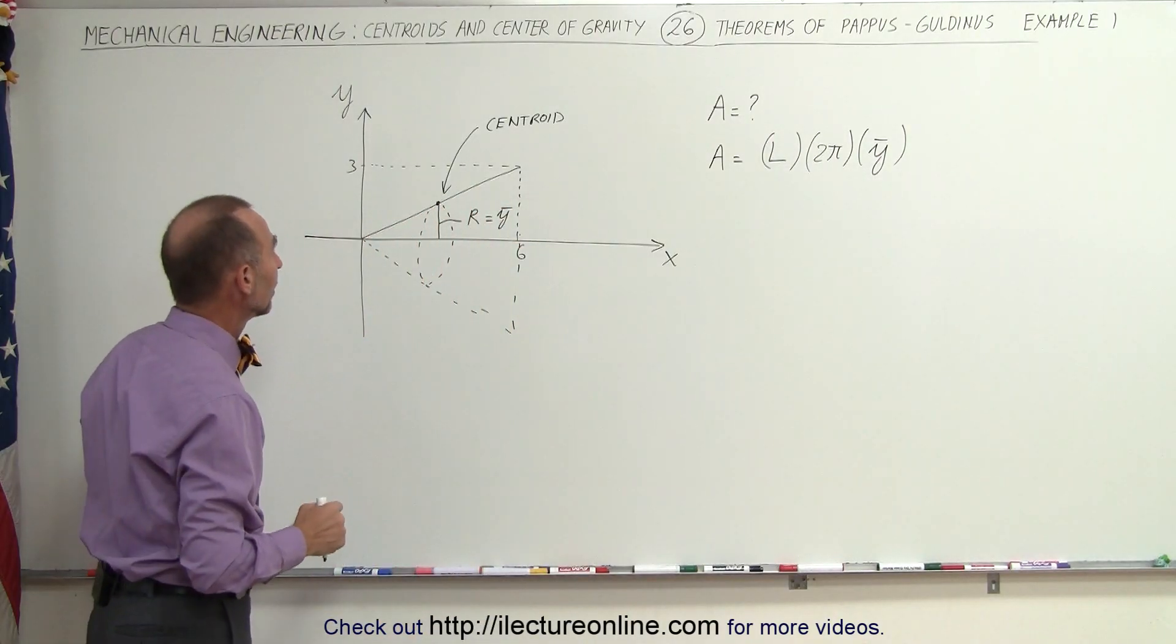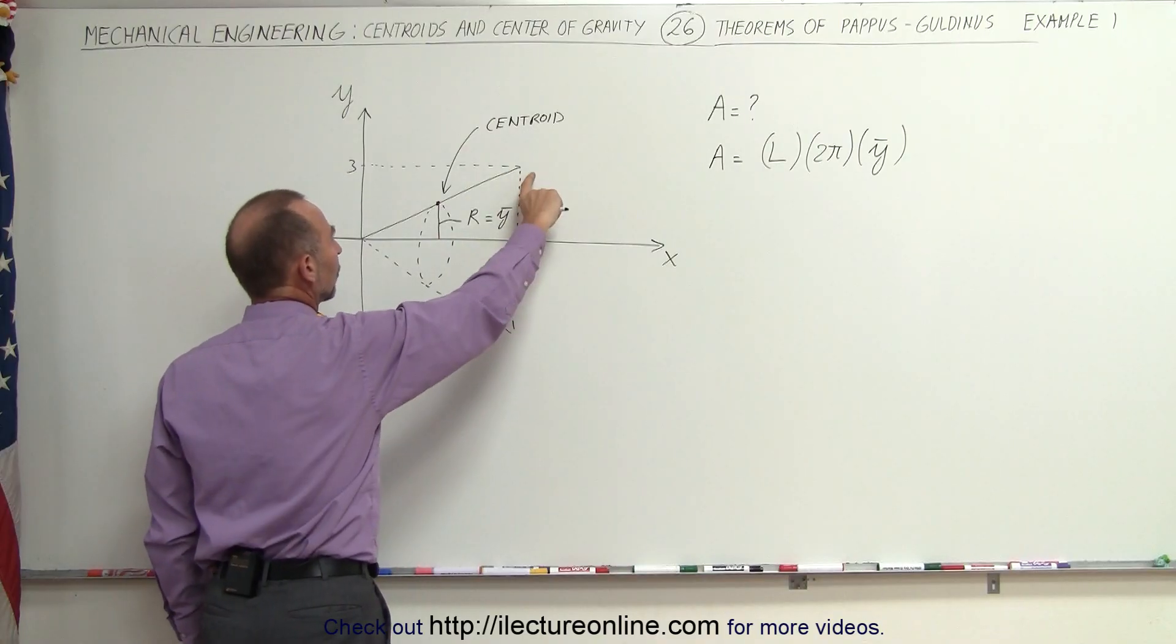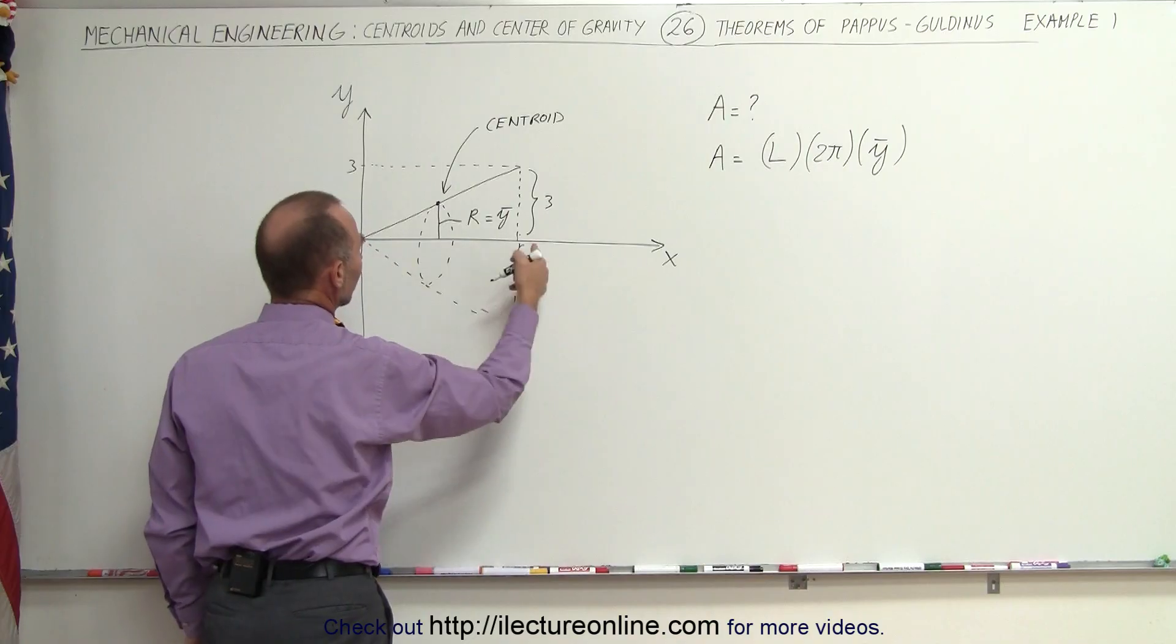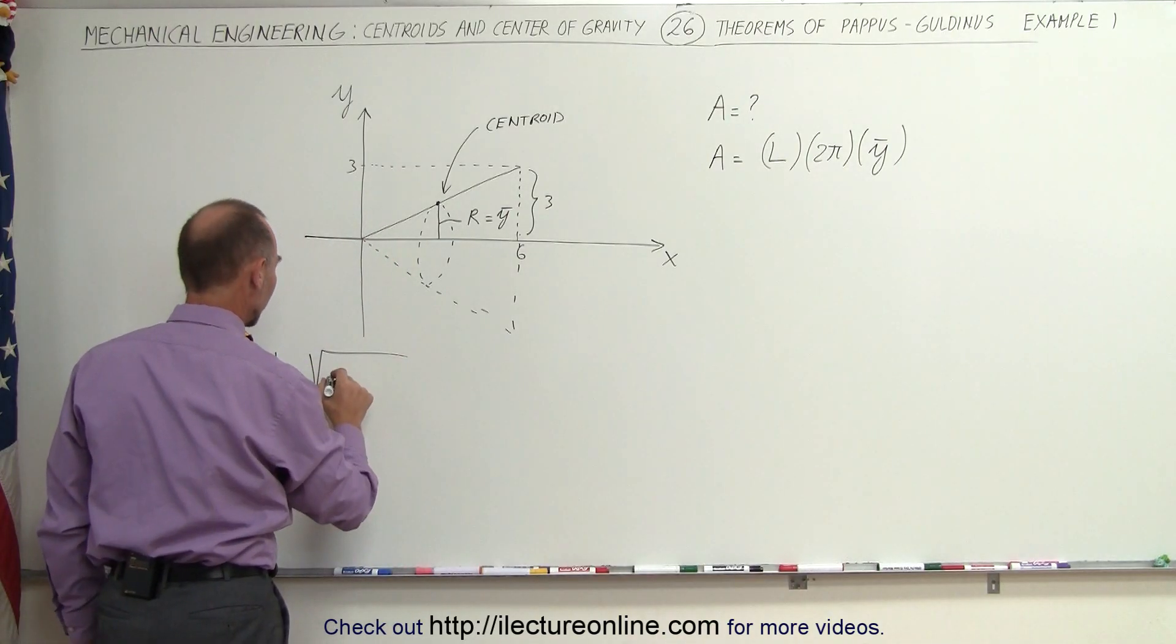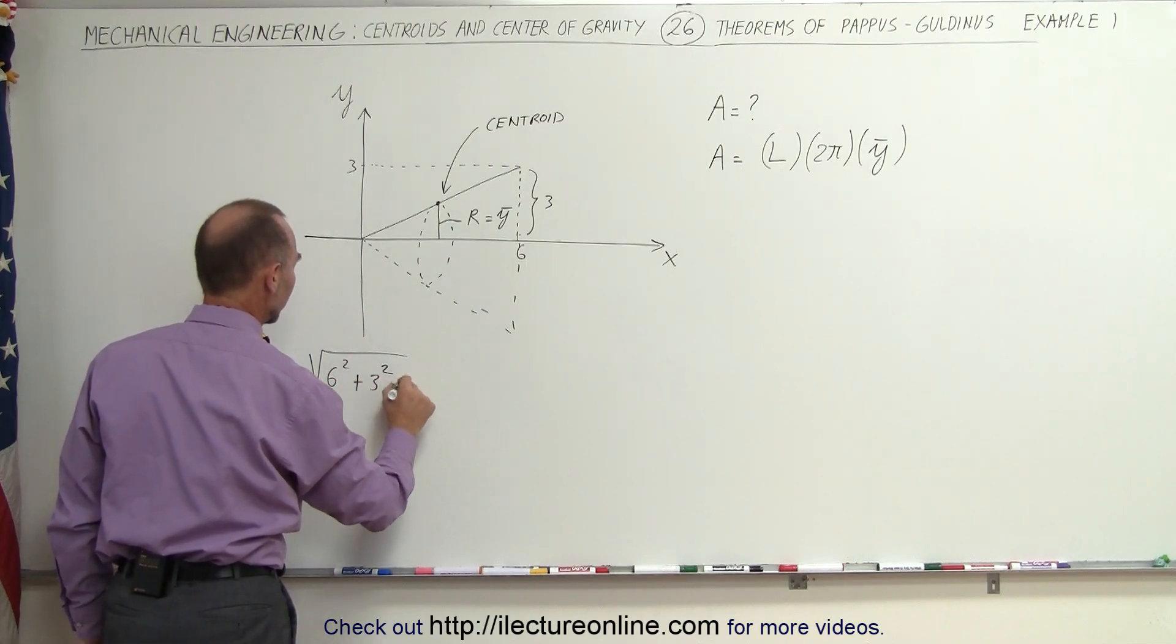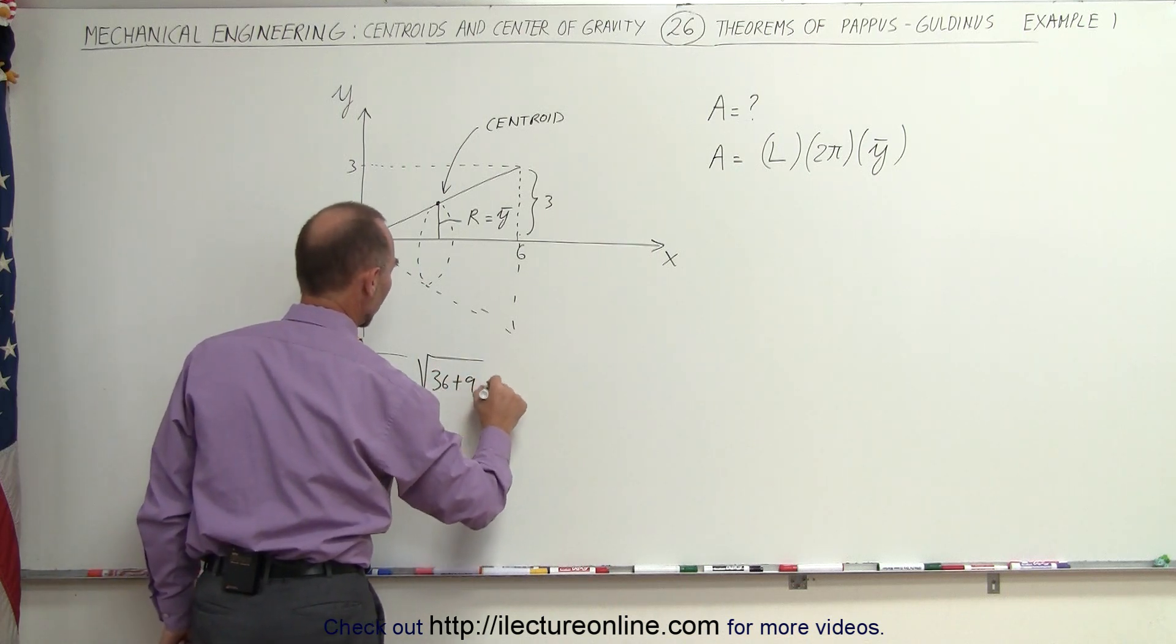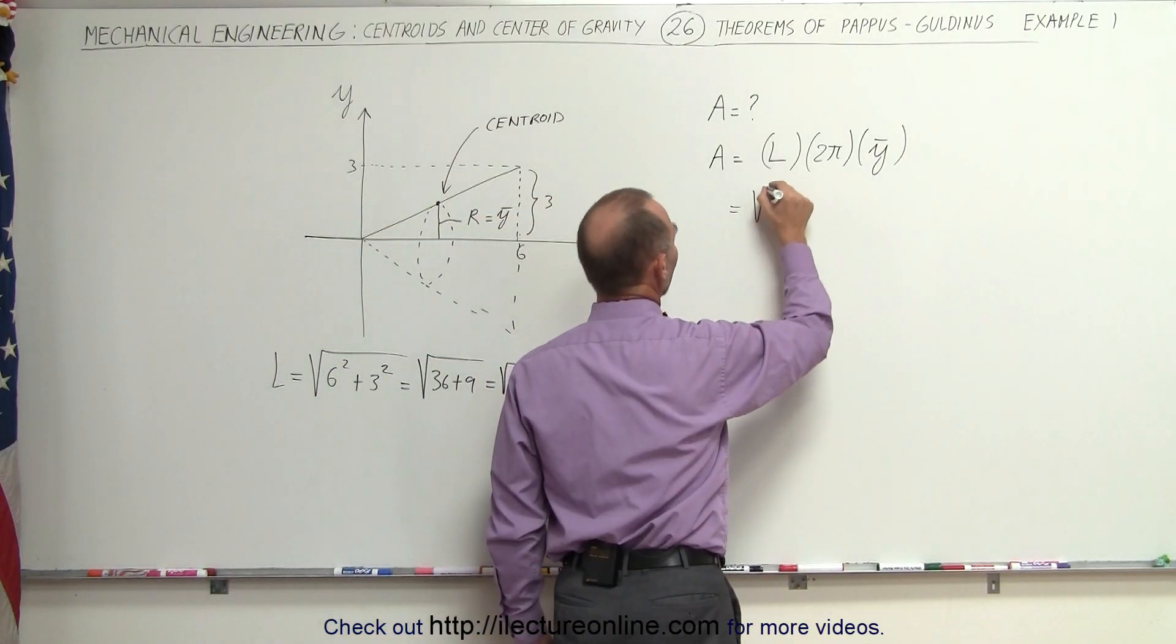All we have to do is find the length. Now the length here can be found. This is a triangle. This is 3. This height here is 3 units. The distance here is 6 units. So the length is equal to the square root of the sum of the squares of the sides. That'd be 6 squared plus 3 squared. That's equal to the square root of 36 plus 9, which is equal to the square root of 45.